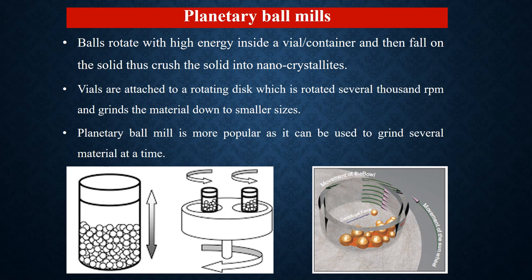Here is the planetary ball mill. It can be of different shapes or types. These are the vials or containers, which hold the material to be converted into nanomaterial or nanocrystallized. These vials are attached to a rotating disc which is rotated several thousands of rounds per minute and grinds the material down to a smaller size. It is very popular and can be used to grind several materials at a time, as one ball mill can contain several containers or vials in which different materials can be converted simultaneously.